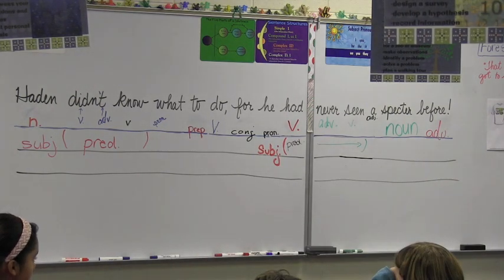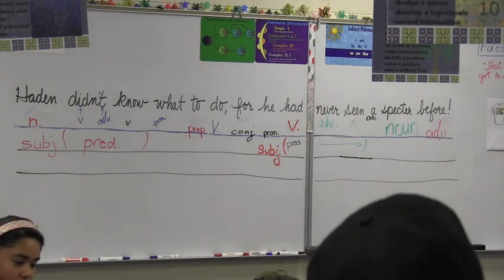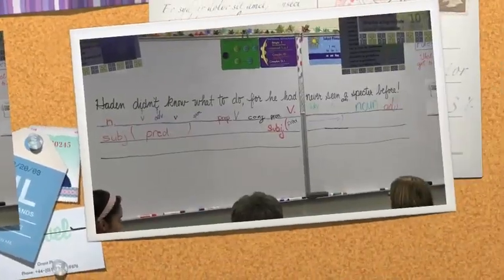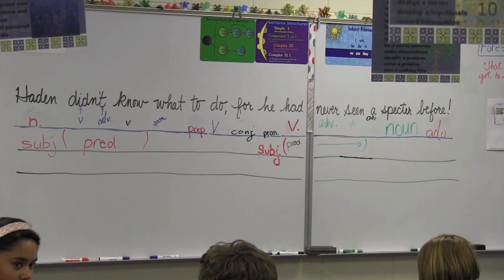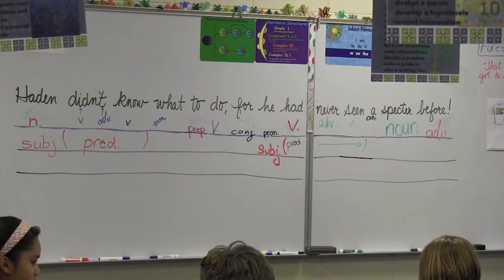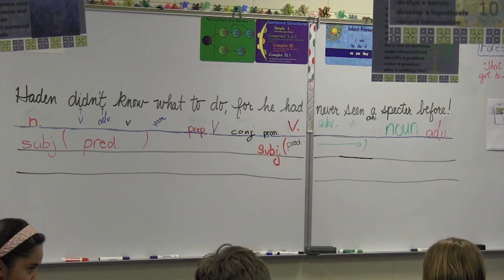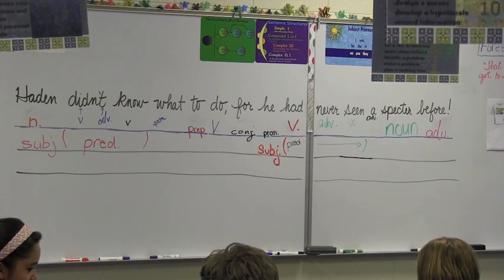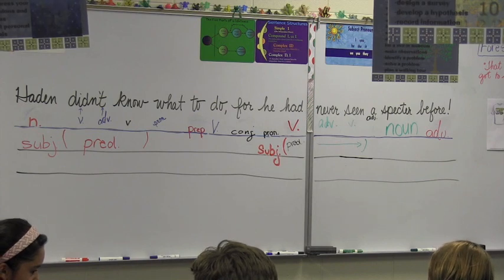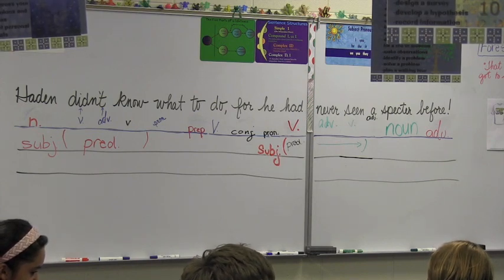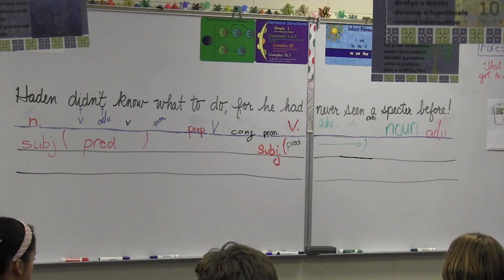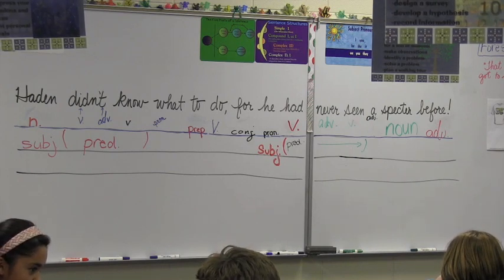So back to the parts of the sentence. We've got a subject predicate. In the first clause, what kind of predicate do we have? It's an action verb. So if we have an action verb, what will we look for? We would look for the direct object. And if there is one, what question would we ask ourselves to find out if there is one? Hayden didn't know what? He didn't know what to do. So there's our direct object. Sefer, would you go identify it?